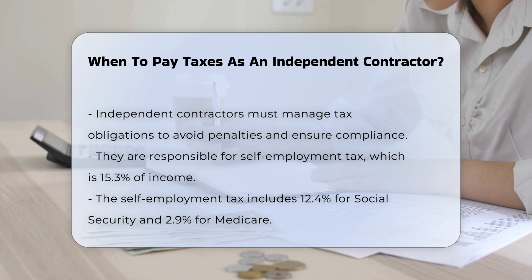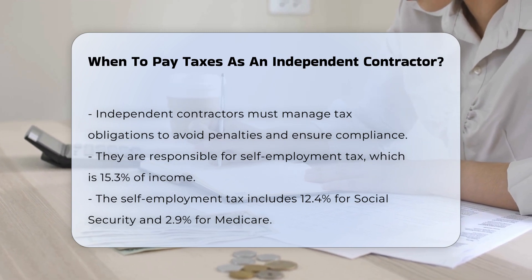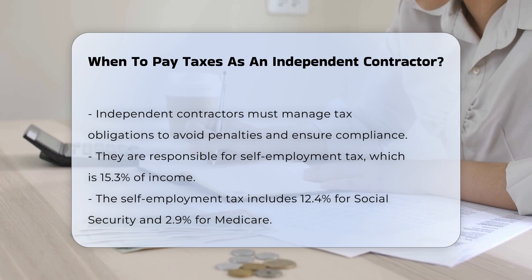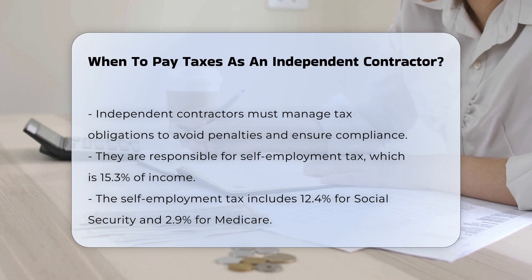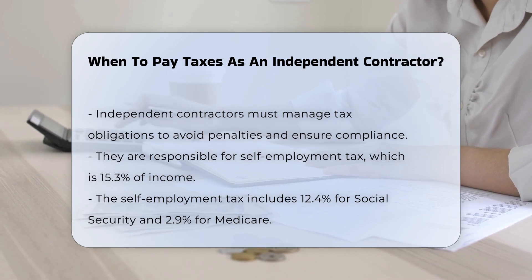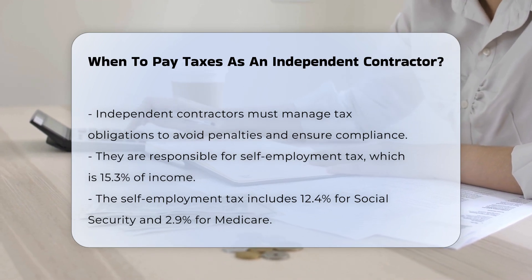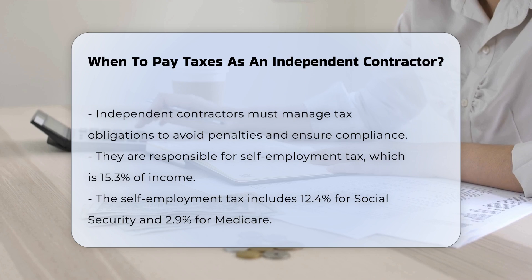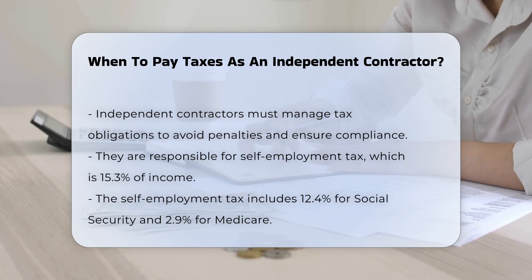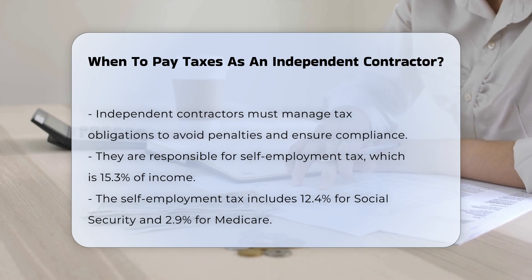Self-employment tax. Independent contractors are responsible for paying their own Social Security and Medicare taxes, known as self-employment tax. This tax is 15.3%, with 12.4% going to Social Security and 2.9% to Medicare.